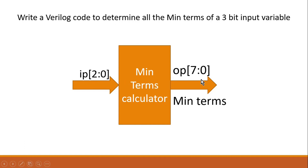For example, if 'ip' is 000 then 'op' bit 0 will be high; if 'ip' is 111 then 'op[7]' will be high. Similarly, other remaining bits will go high as per the input combination. Now you have to write a Verilog code for this min terms calculator. You can take your time and pause the video. Those who know the answer, please write it down in the comment section and we can discuss it there.